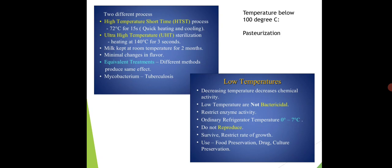For pasteurization of milk, the first class is 72°C for 15 seconds, and the second class is 63°C for 30 minutes. We are studying this under temperature below 100°C. At 63°C for 30 minutes, the milk is completely sterilized. So in the pasteurization process, a high temperature is given for a certain period of time.